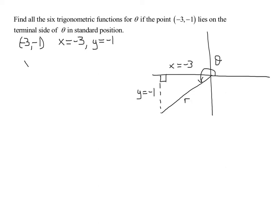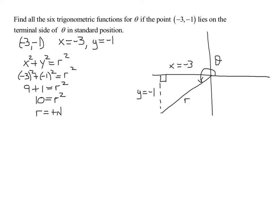Remember that x squared plus y squared equals r squared using the Pythagorean theorem. So negative 3 all squared plus negative 1 all squared equals r squared. Negative 3 squared is positive 9, and negative 1 squared is positive 1, because a negative times a negative is a positive. So r squared equals 10. Now we take the square root of both sides, but we only need the positive square root.